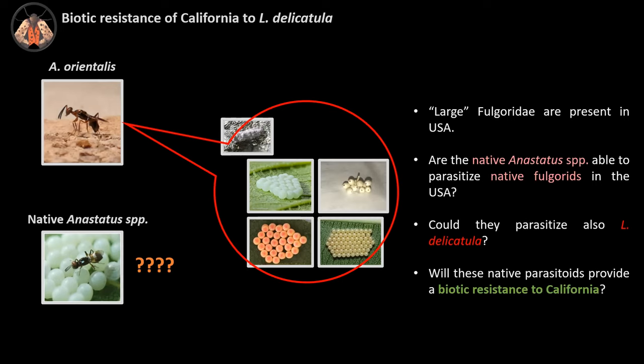We know that large fulgorids are present in America and North America. So we were wondering: are native Anastatus species able to parasitize fulgorids? And if so, will some of these species be able to parasitize spotted lanternfly? The big question is whether native Anastatus parasitoids would provide biotic resistance against the invasion of spotted lanternfly in California.